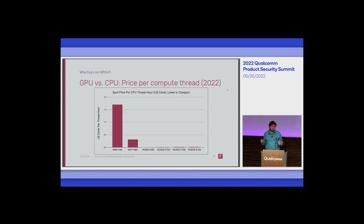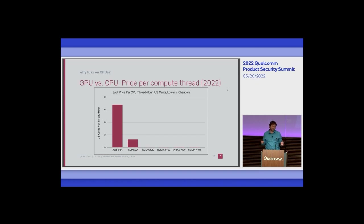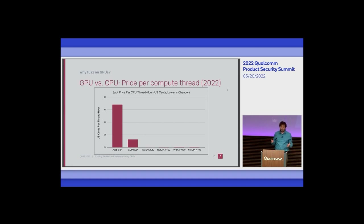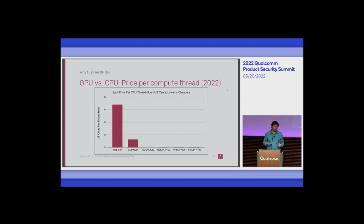This also gives us an economic argument for why we want to fuzz on GPUs. The main use of GPUs is machine learning models. When a GPU is no longer good for running ML because a much better one has come out in the past 18 months, you still have it in your cloud system but nobody is using it — and the capital costs have already been paid. The cost per thread of older GPUs, which are useless for machine learning, is actually really good. The pricing is phenomenally good for what you get.